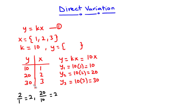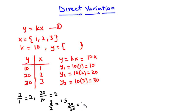Now let's focus on x equals 3 and y equals 30. As x decreases from 3 to 2, y decreases from 30 to 20. Now 3 divided by 2 equals 1.5, and 30 divided by 20 equals 1.5. So the decrease of both the x and y values are of the same ratio.